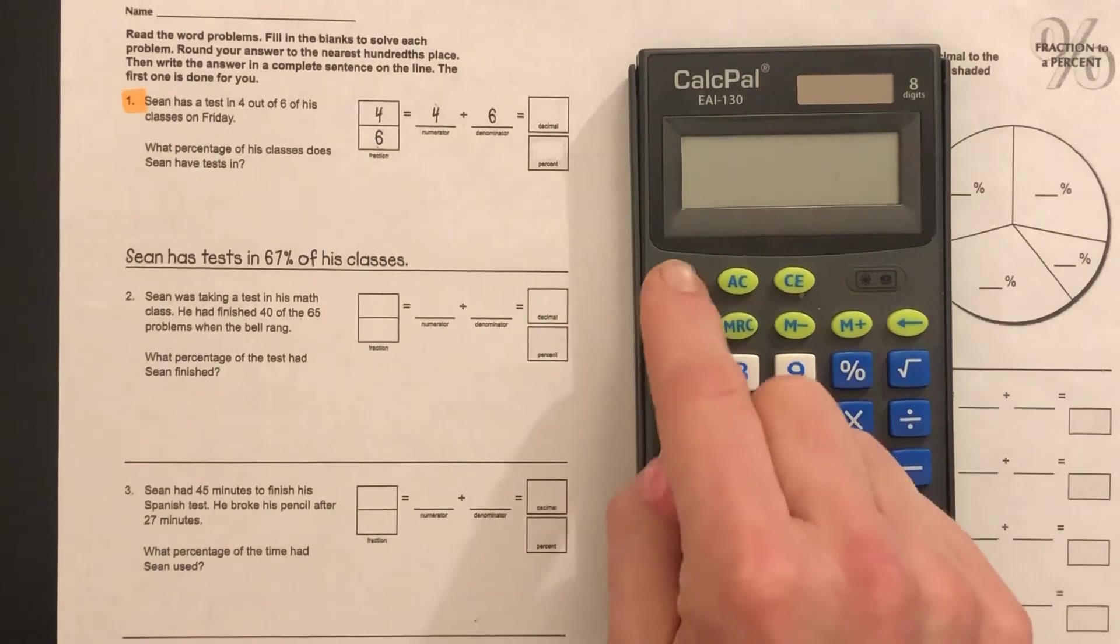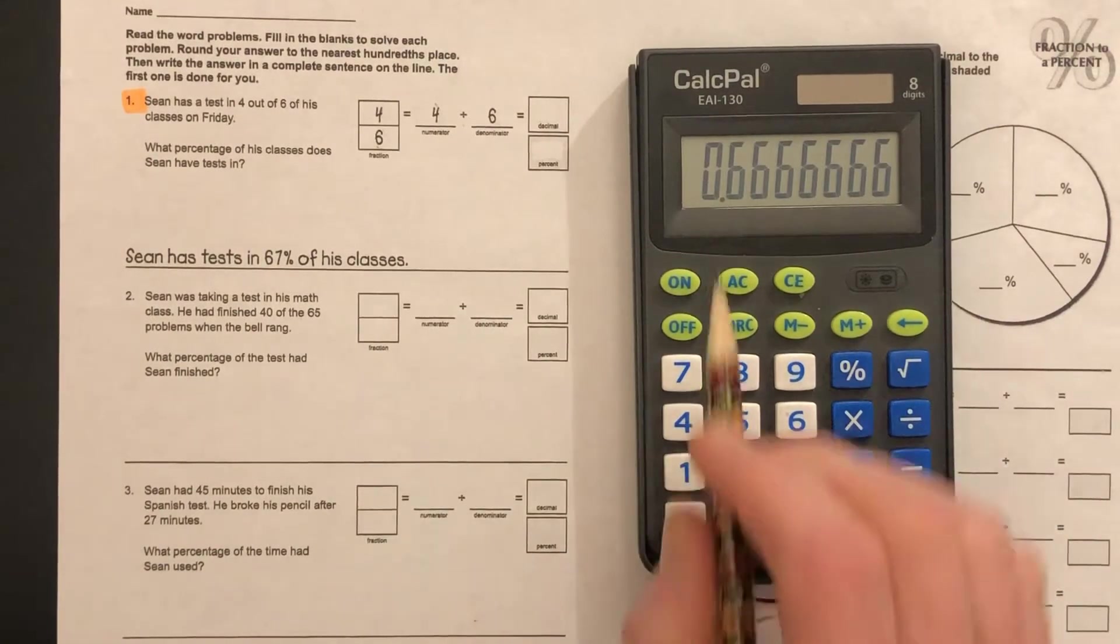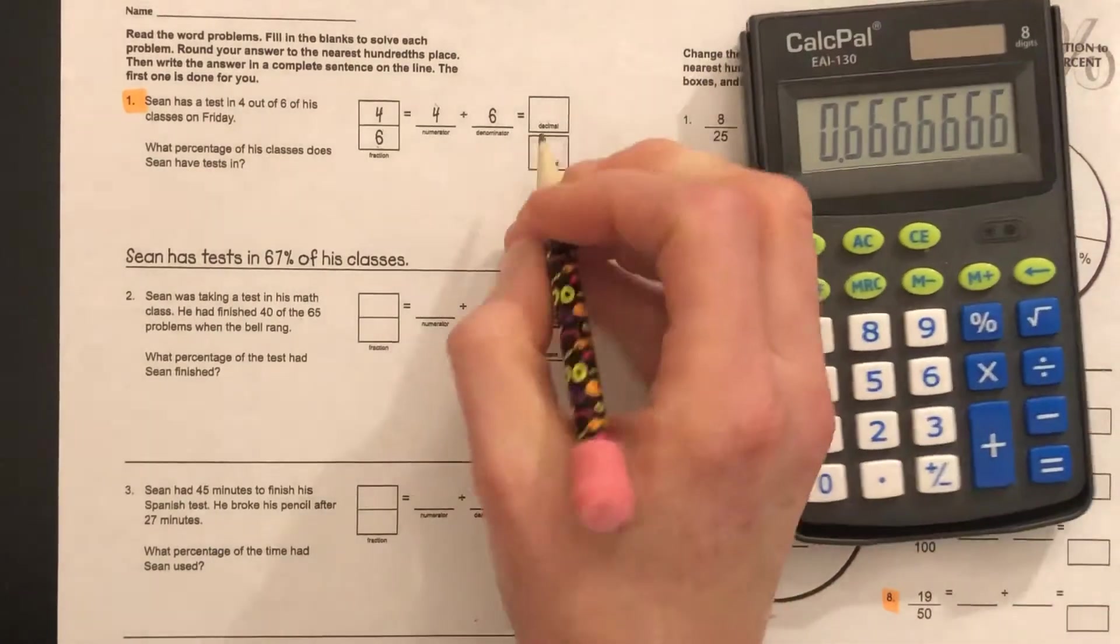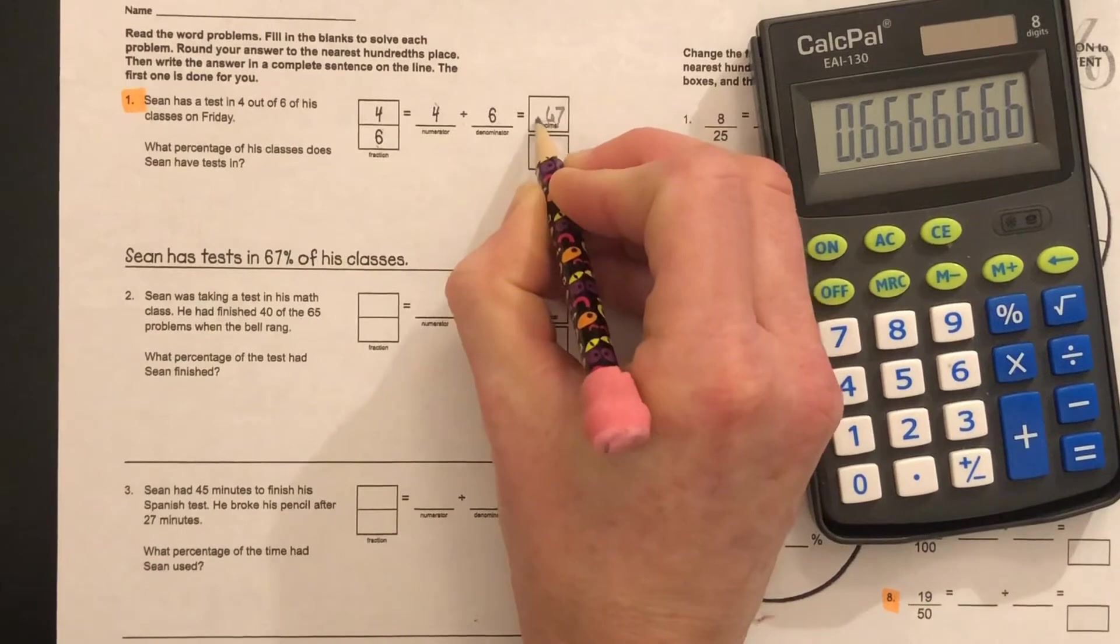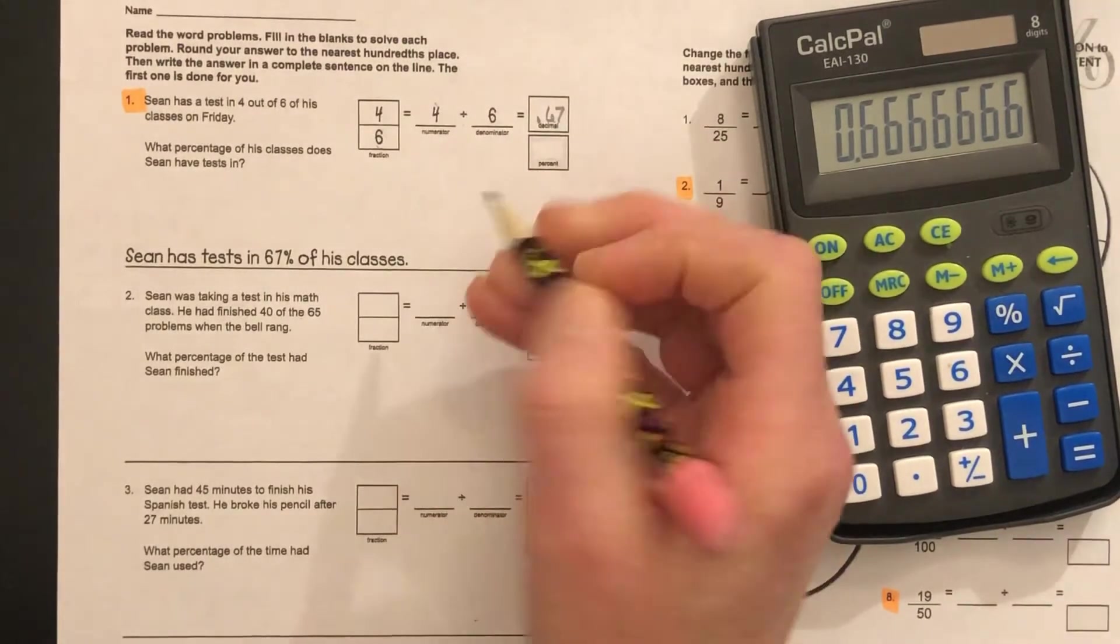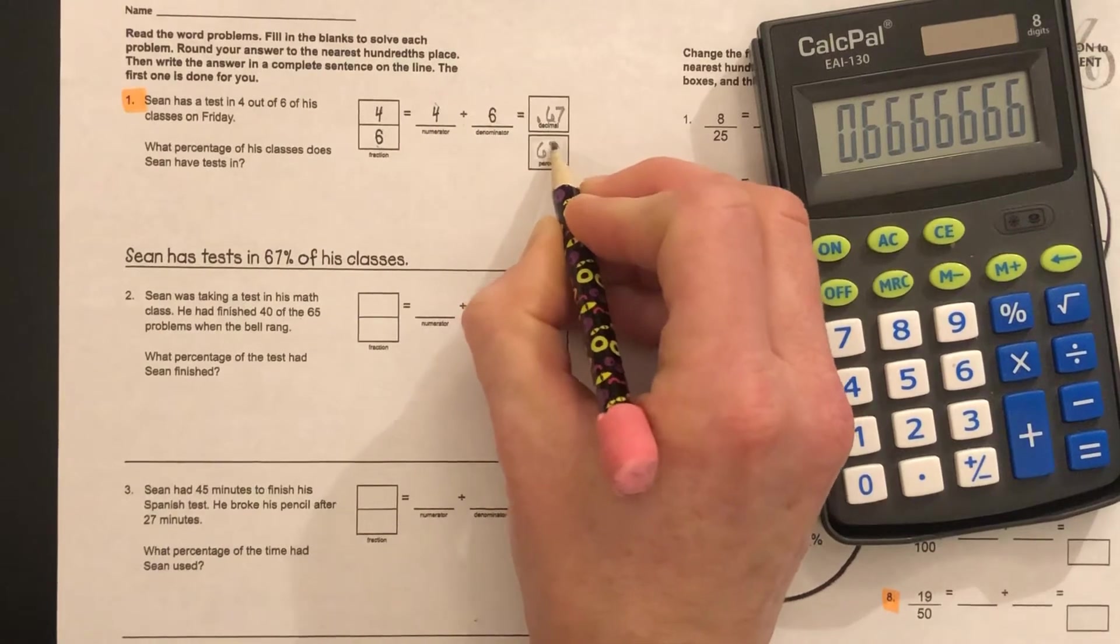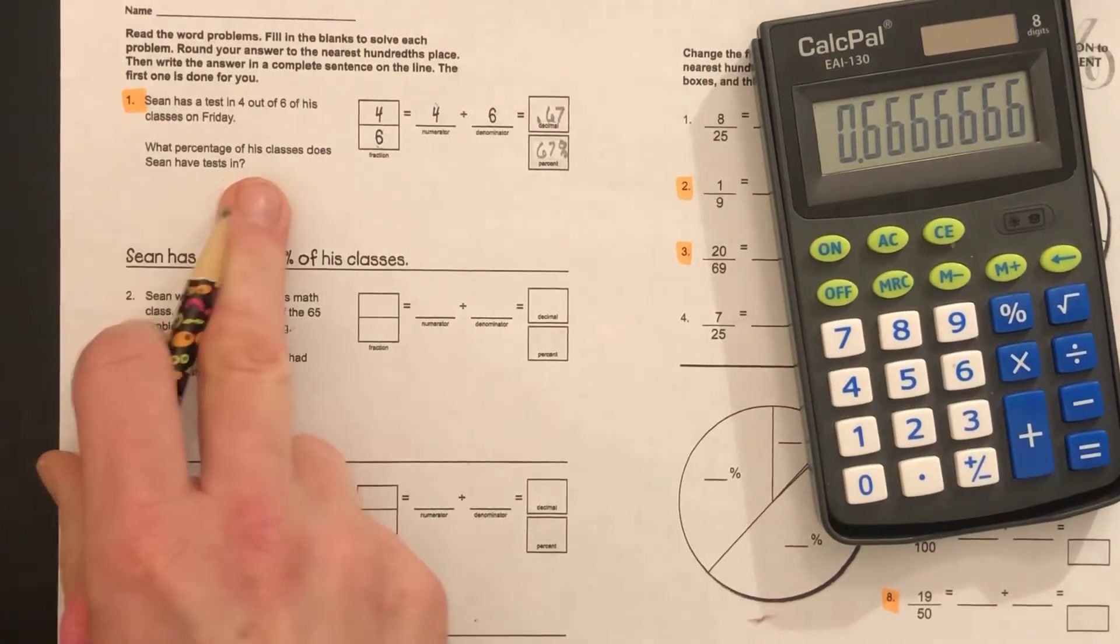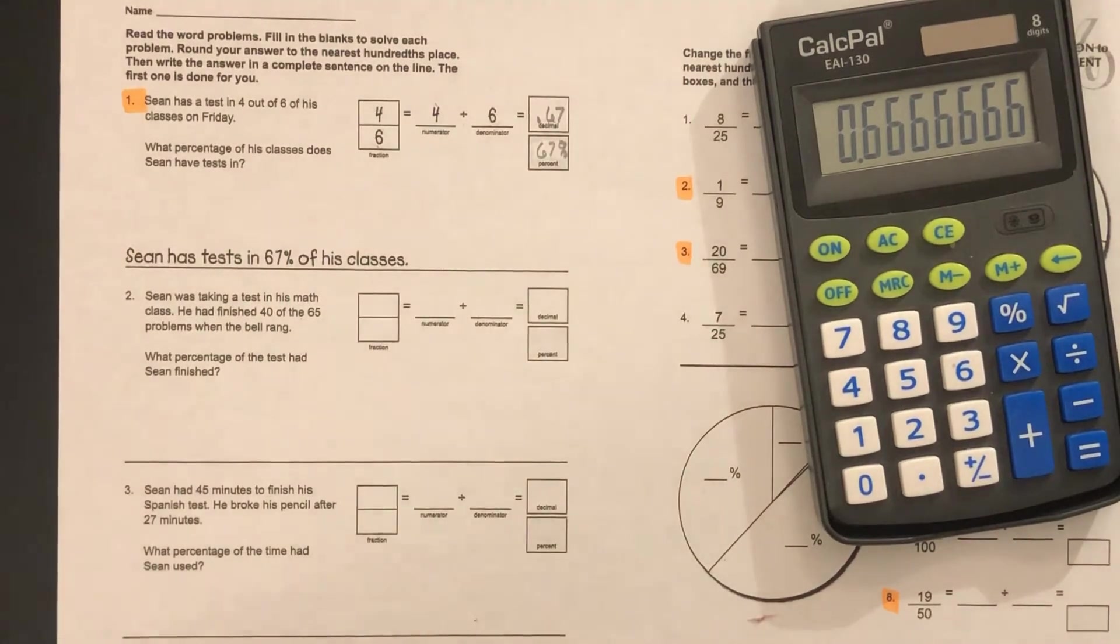Four divided by six, you're going to divide it out: 0.6666. We're going to round it to the nearest hundredth, so 0.67 in decimal form. Sixty-seven hundredths, sixty-seven percent. What percentage of classes does Sean have tests in? Sixty-seven percent. See how simple it is? You'll have more practice before you're on your own.